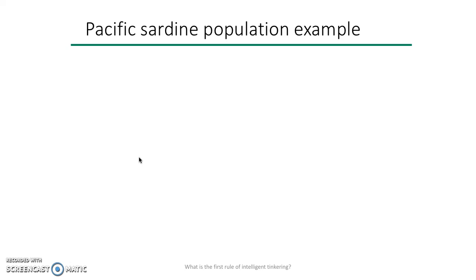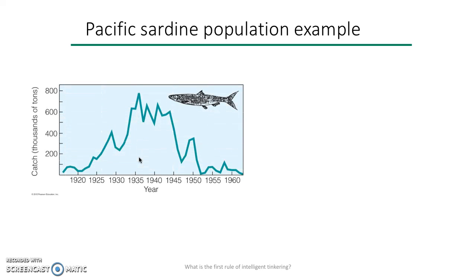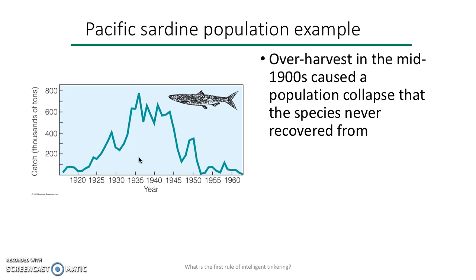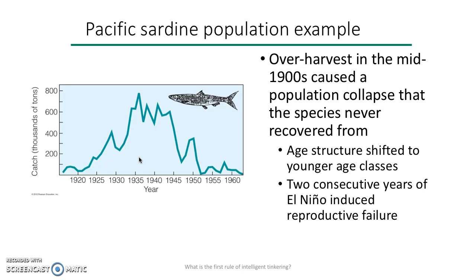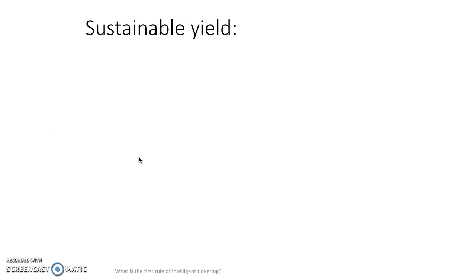A specific sardine population is an example of a crash. In the 1920s, there was not a lot of catch — you can see it increased greatly in the 1930s and 40s. It declined not because we lost our taste for sardines, but because we over-fished it. Over-harvest caused a population collapse, and the species has not recovered. The age structure shifted to younger age classes and could not support the growth. Two consecutive years of El Niño-induced reproductive failure, and the population has been small ever since.